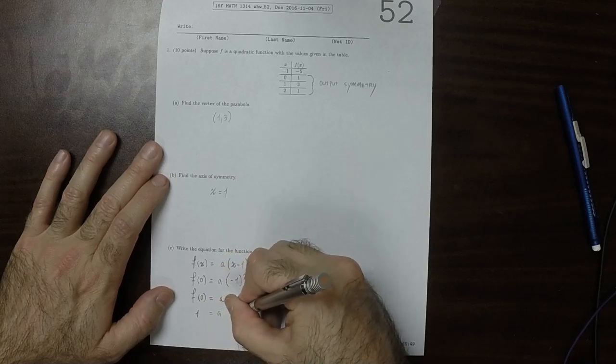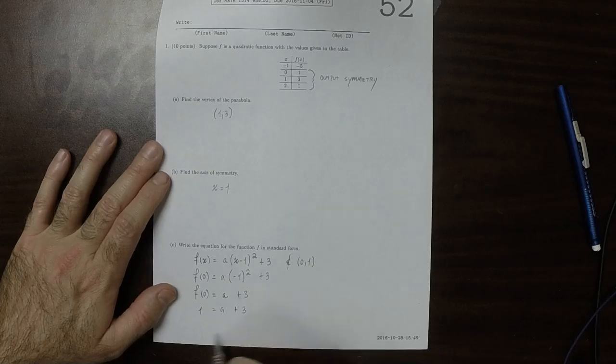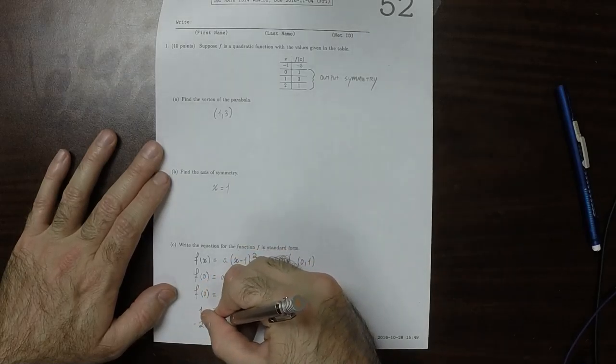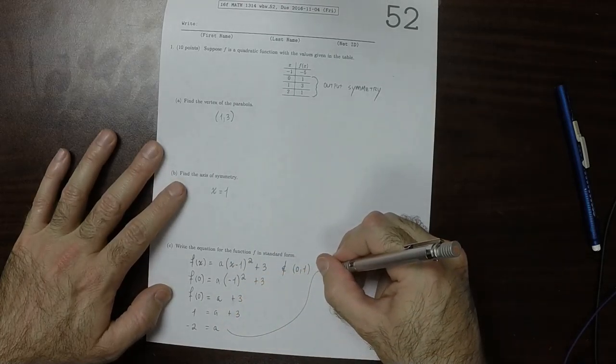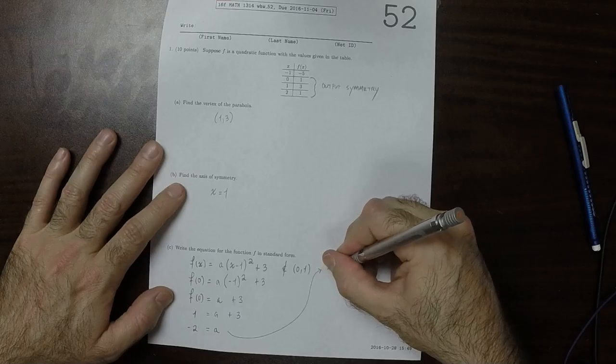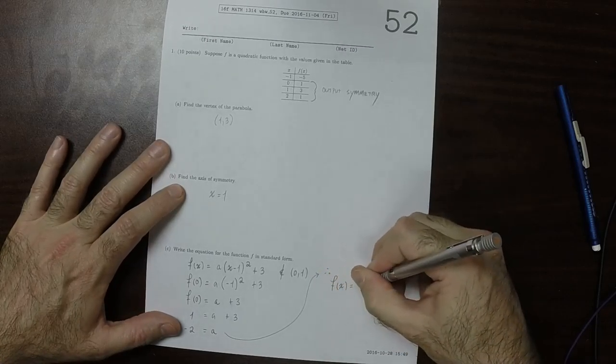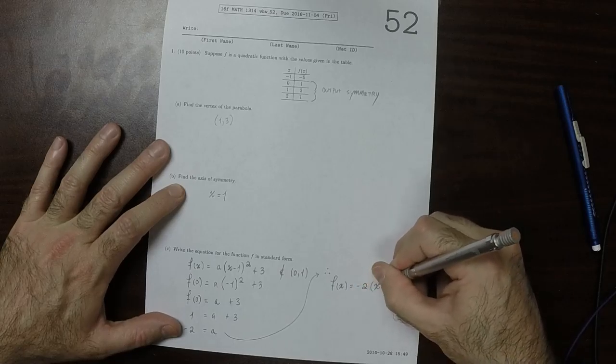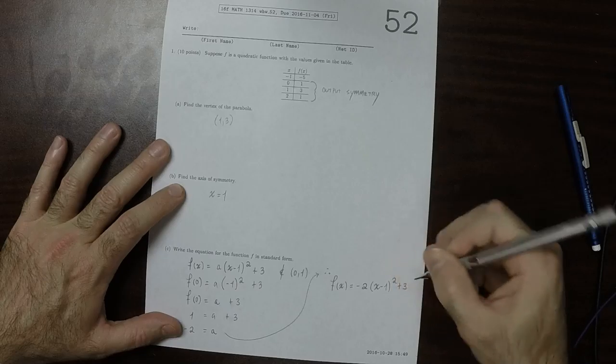So a plus 3. So then moving the 3 to the other side, that would be negative 2 is a. And therefore, f of x is negative 2 times x minus 1 squared plus 3.